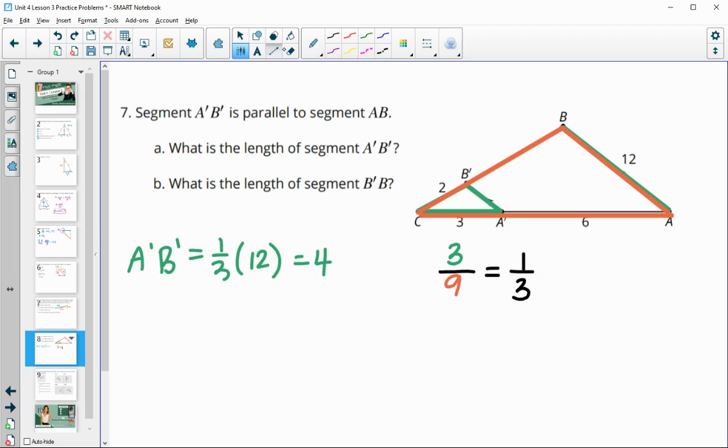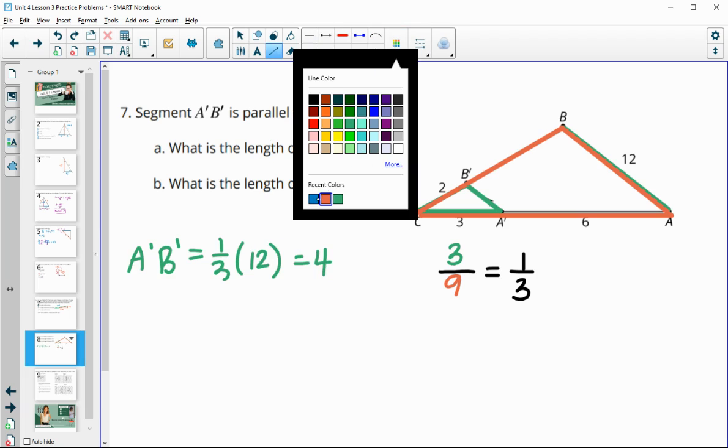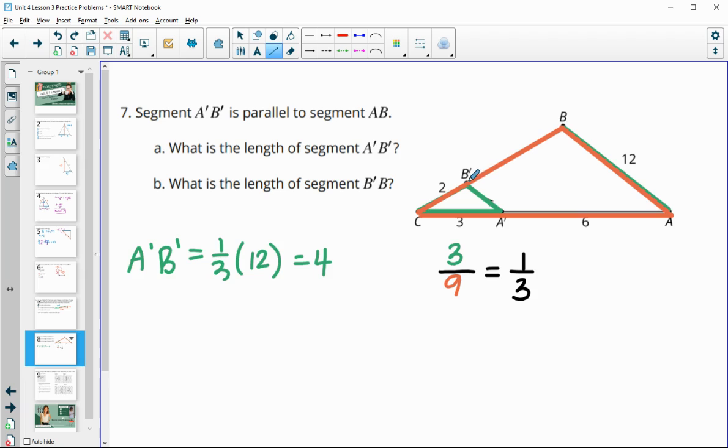Then it wants to know the length of B'B and now this is just a chunk of the side. And we know that these little segments here are proportional. So we can just look at how the 3 is connected to this 6. So to get from 3 to 6, we would multiply by 2.